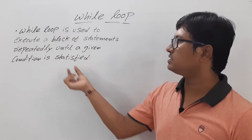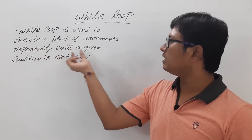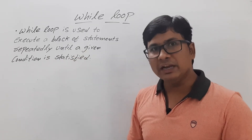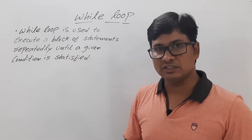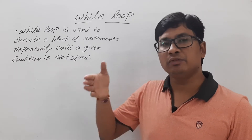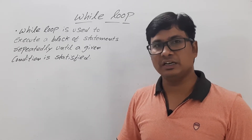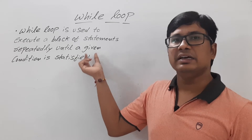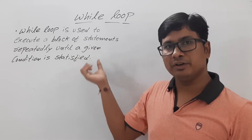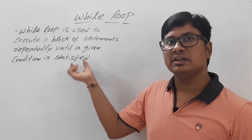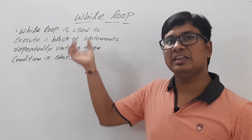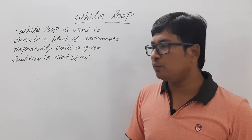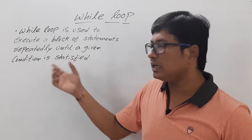A while loop is used to execute a block of statements repeatedly until a given condition is satisfied. Whenever the condition is not satisfied, it will come out from the while loop. We will execute a certain number of statements till the condition is true; when the condition becomes false we will come out from the while loop.